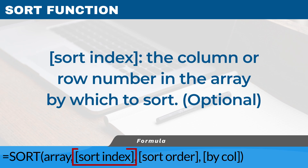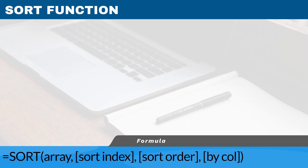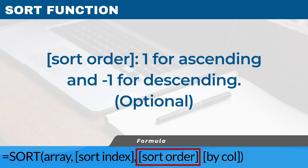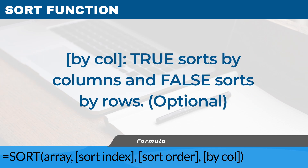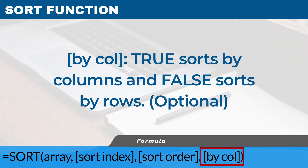The sort index is optional — this is the column or row number in the array by which to sort; the default is one, the first column. The sort order is also optional: use one for ascending and minus one for descending; the default sort order is ascending. The by_col argument is also optional: true sorts by columns and false sorts by rows; the default is false, which sorts by rows.